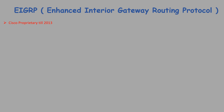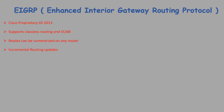This routing protocol is mostly used on Cisco devices and all routers in the network must support it. Features of EIGRP include support for classless routing and VLSM, routes can be summarized on any router in the network, incremental updates, support for load balancing, and MD5 authentication.